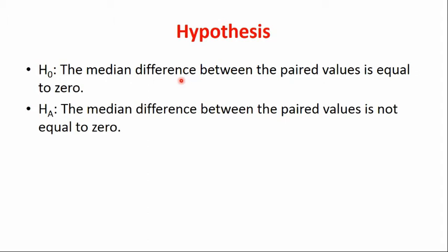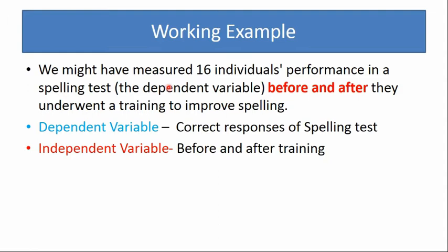The hypothesis of this test: the null hypothesis states that the median difference between the paired values is equal to zero. The alternate hypothesis states that the median difference between the paired values is not equal to zero.